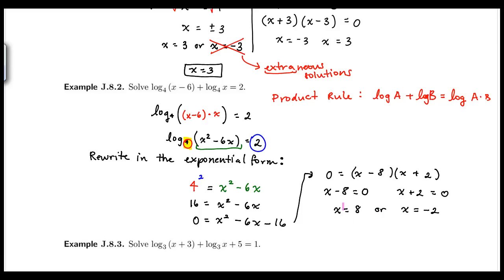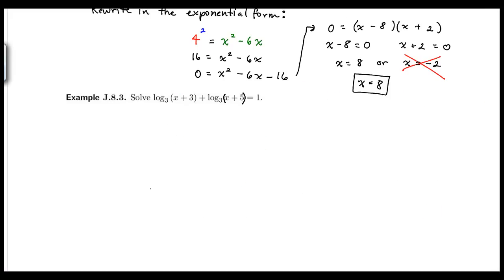I need to check that substituting each solution into the original logs does not produce a negative argument. Putting in x equals 8: 8 minus 6 is 2, which is positive, and 8 is positive — both logs are valid. Putting in x equals negative 2: negative 2 minus 6 is negative 8, which is negative, so the log is undefined. Negative 2 is extraneous and must be discarded. This example has only one solution: x equals 8.